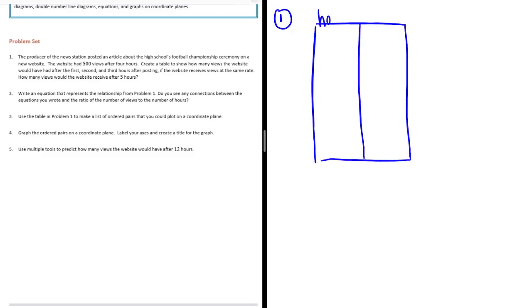So we have hours and views, and we know we need to know up to five hours. So let's do one, two, three, four, five. And we know that after four hours it had 500 views, so I'm going to put four and 500 views.